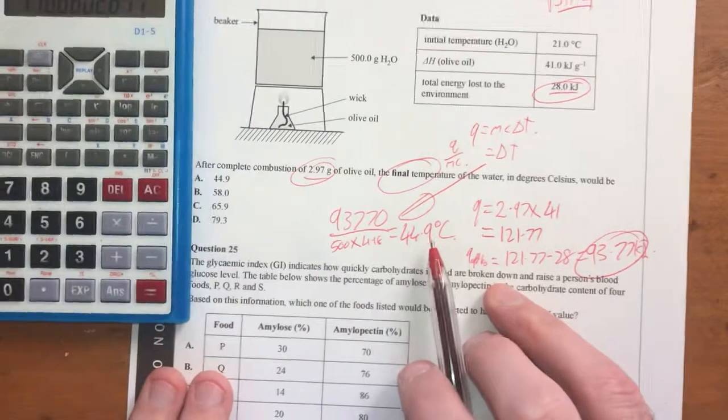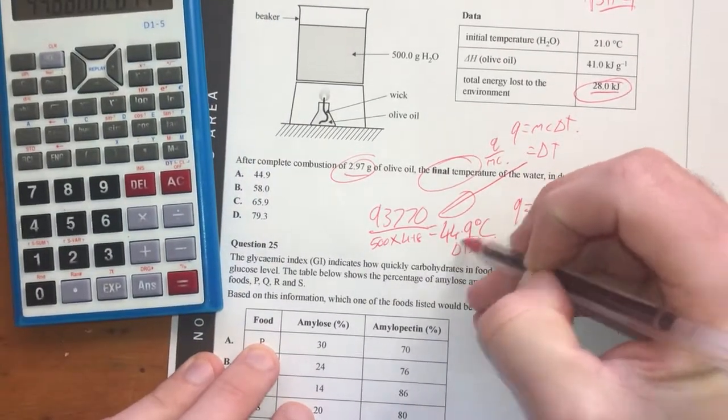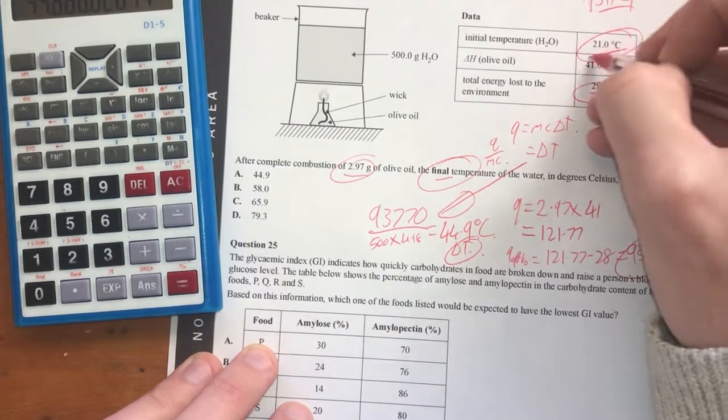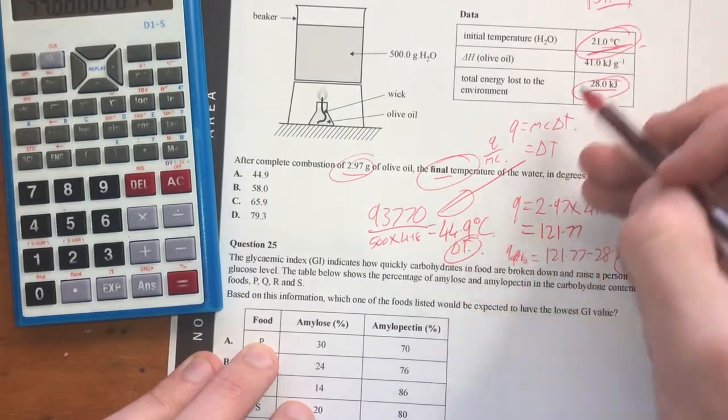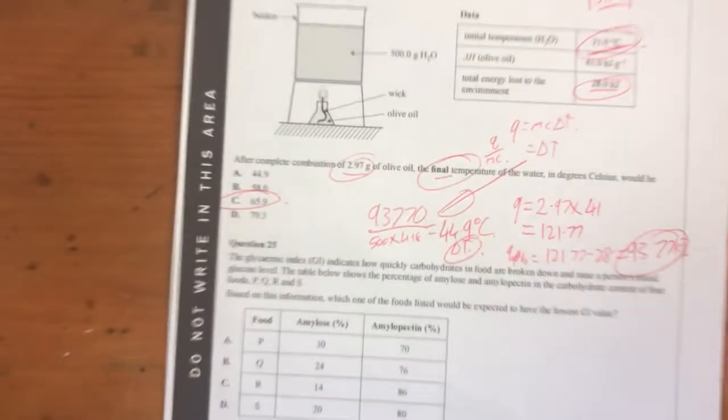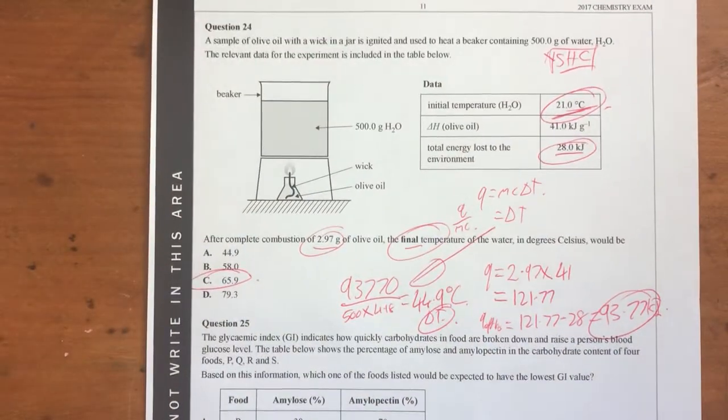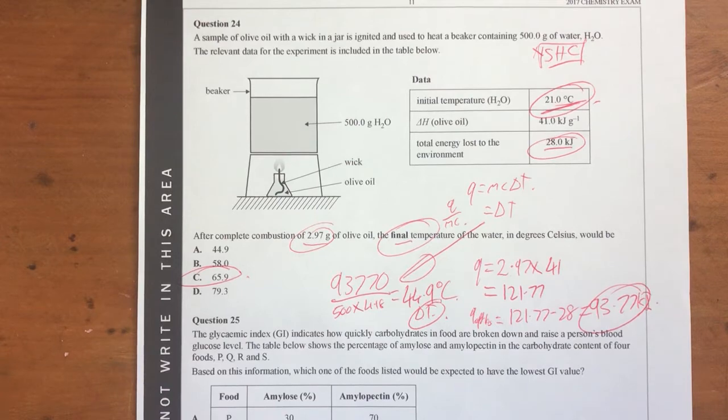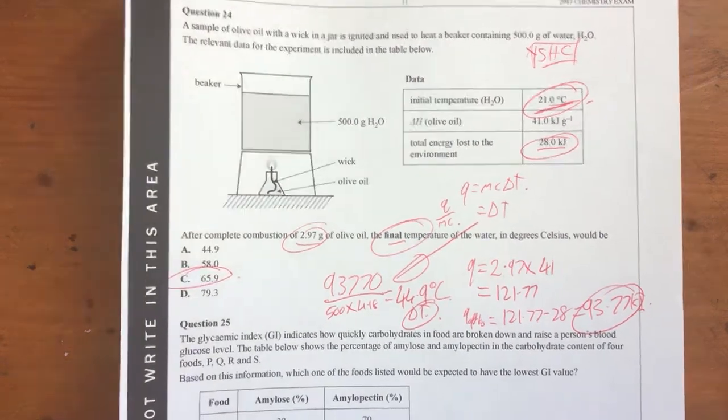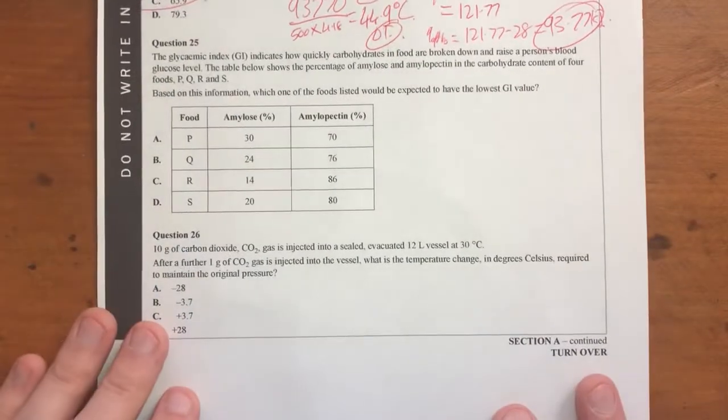That is my temperature change. It's delta T. So therefore, I want the final temperature. So I have to add that to my initial temperature here. So therefore, that plus that is going to be C, 65.9. And that is the answer to that. A lot of working out for a multiple choice question, but fun all the same. There might be an easier way of doing that. That's pretty much how I do it. Next question.